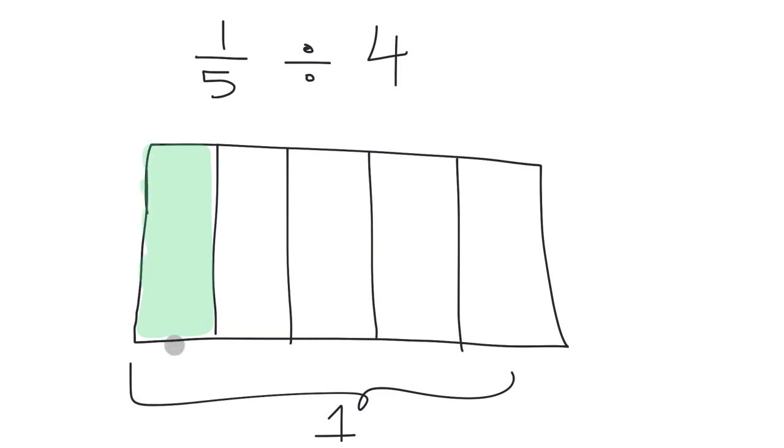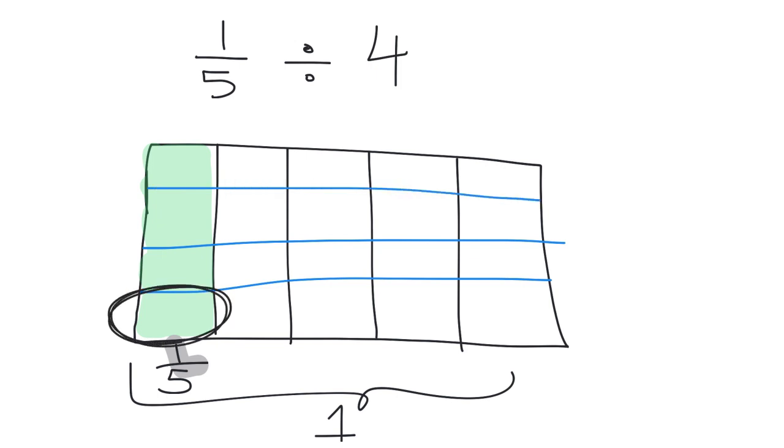And I want to take that one-fifth and I want to chop it up into four parts. That's what that means. One-fifth divided by four means take the one-fifth and chop it up into four parts. So I'm going to chop it up into four parts. So right here is my one-fifth that has been chopped up into four parts.